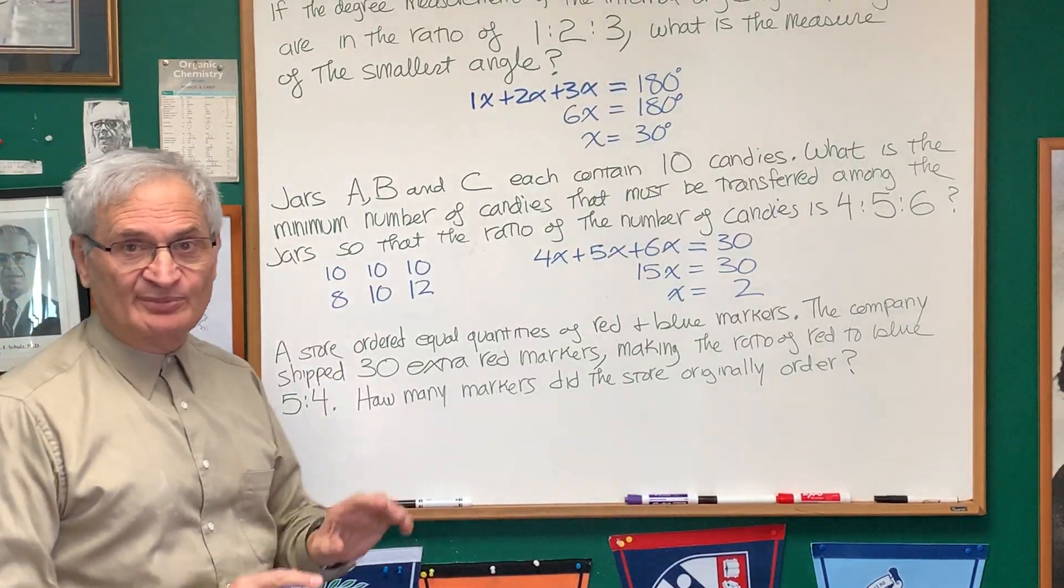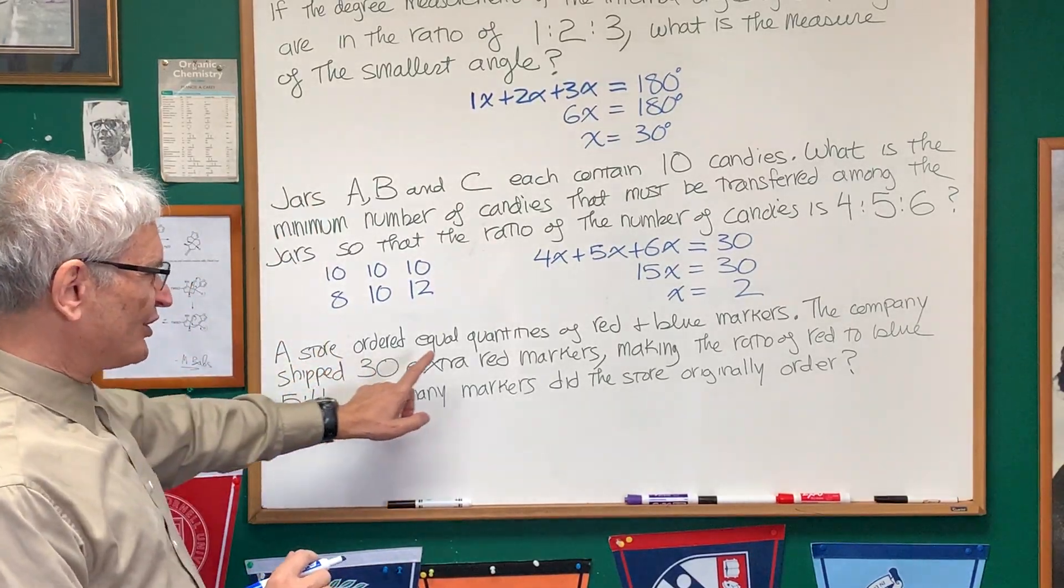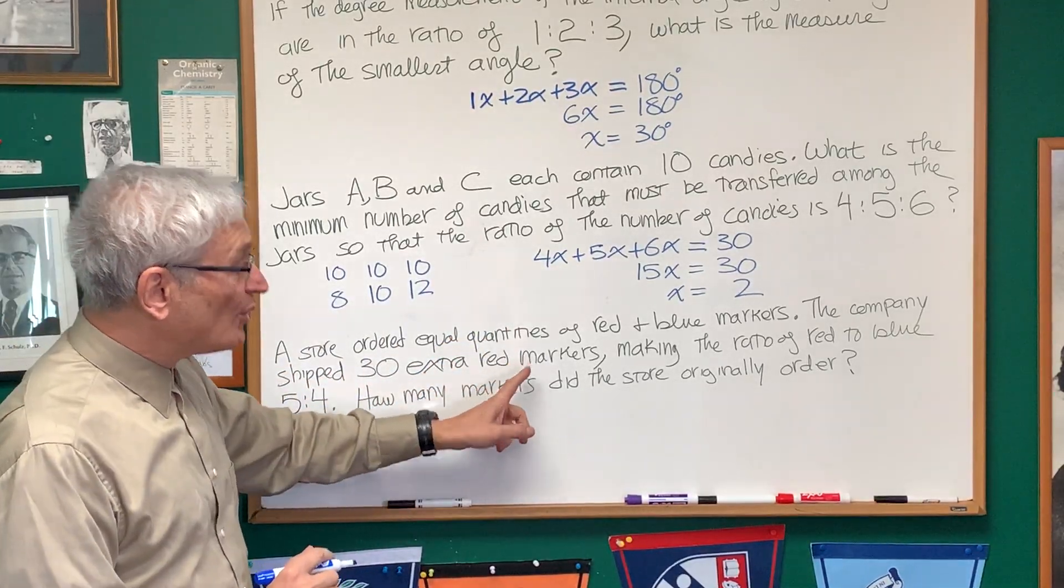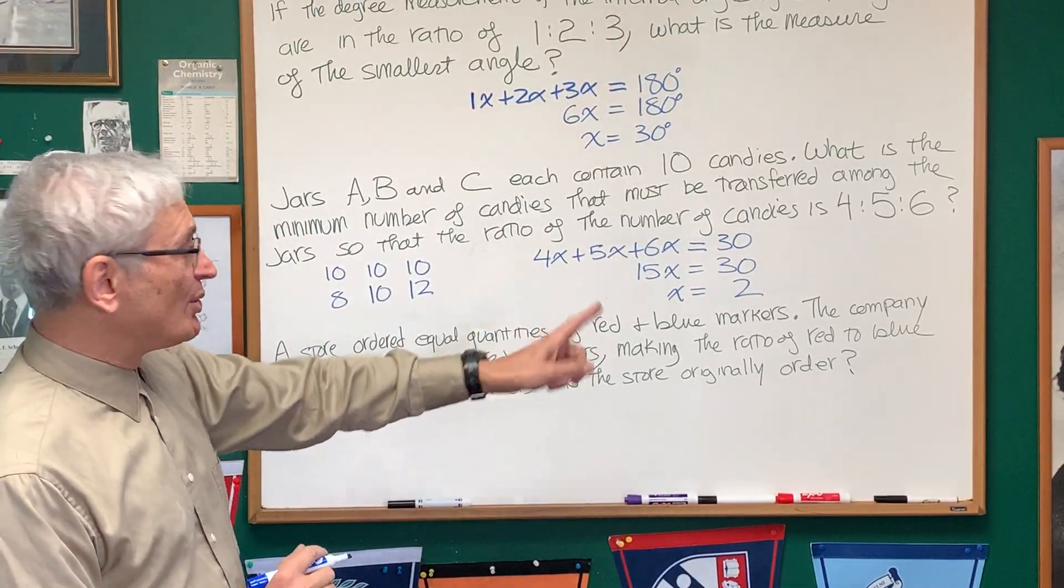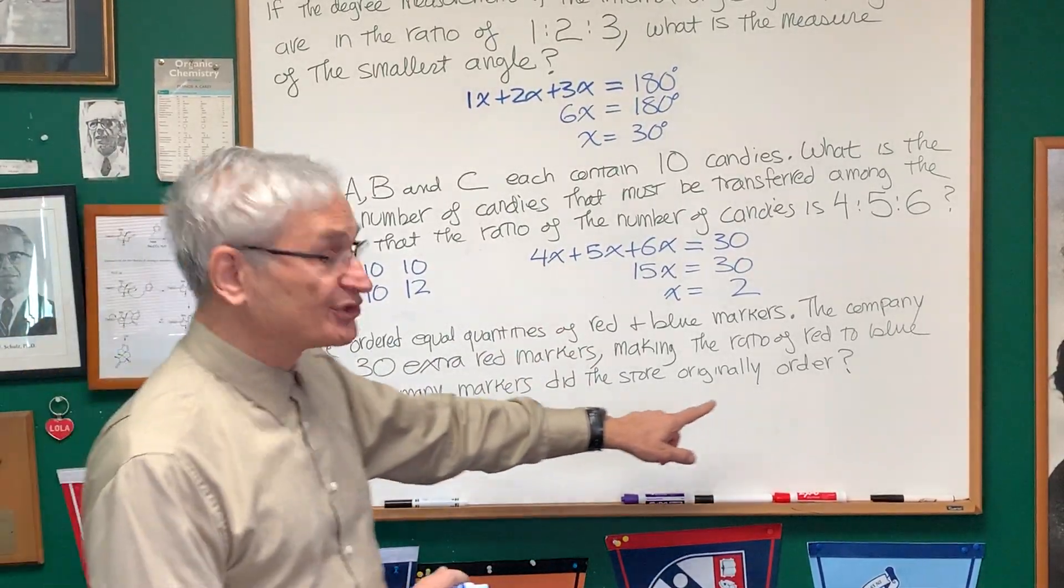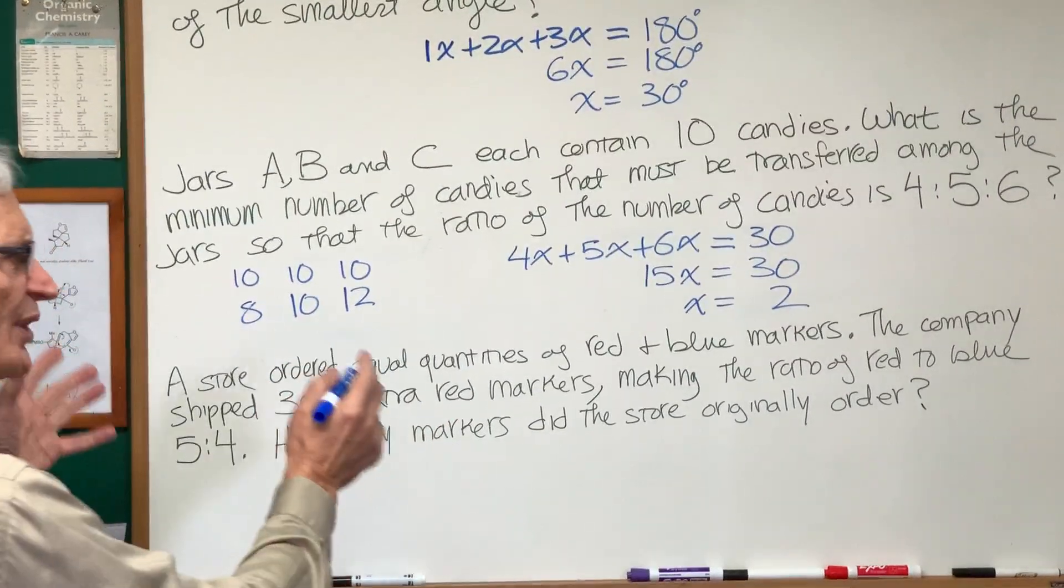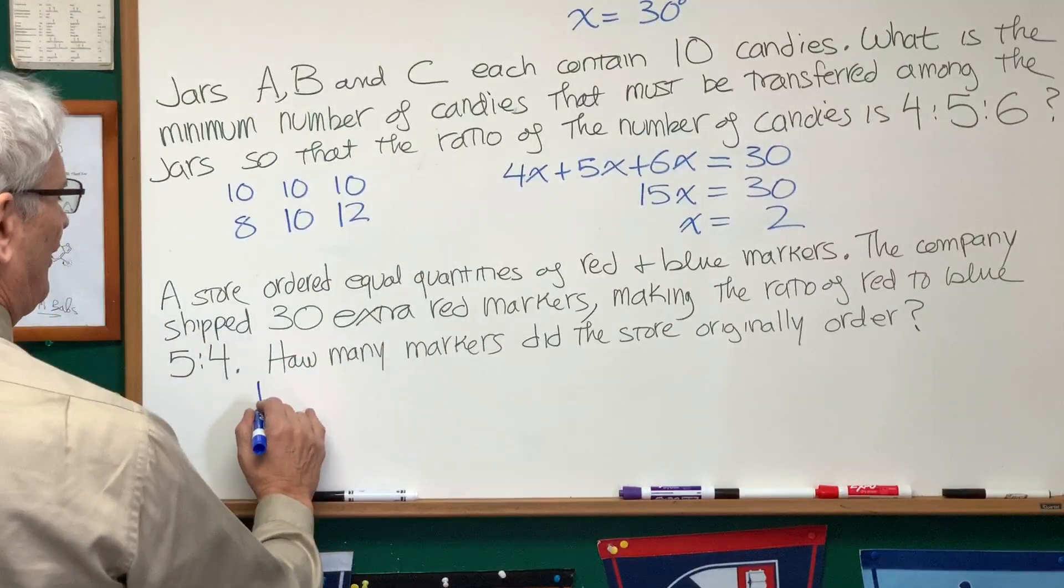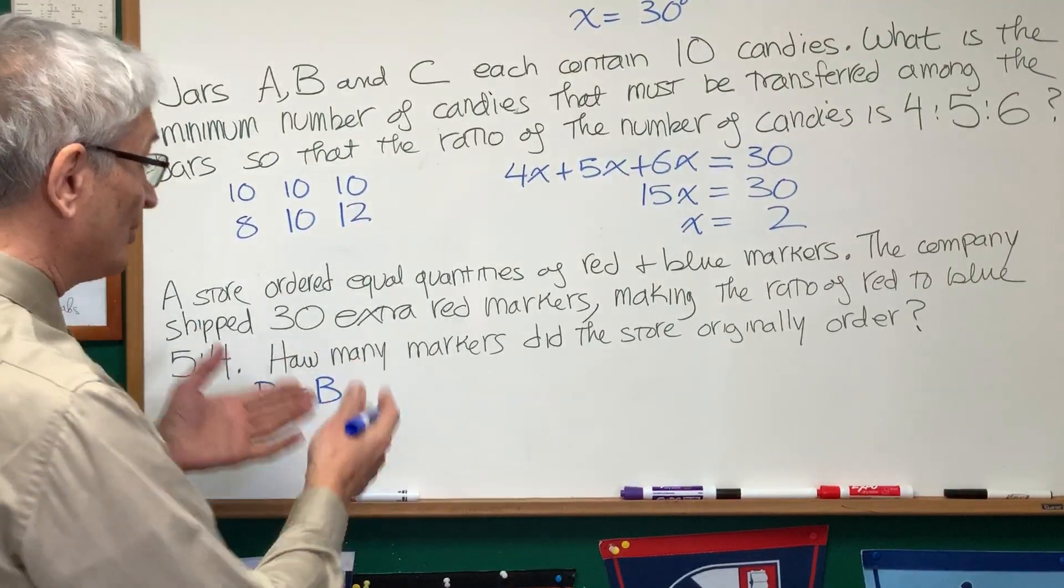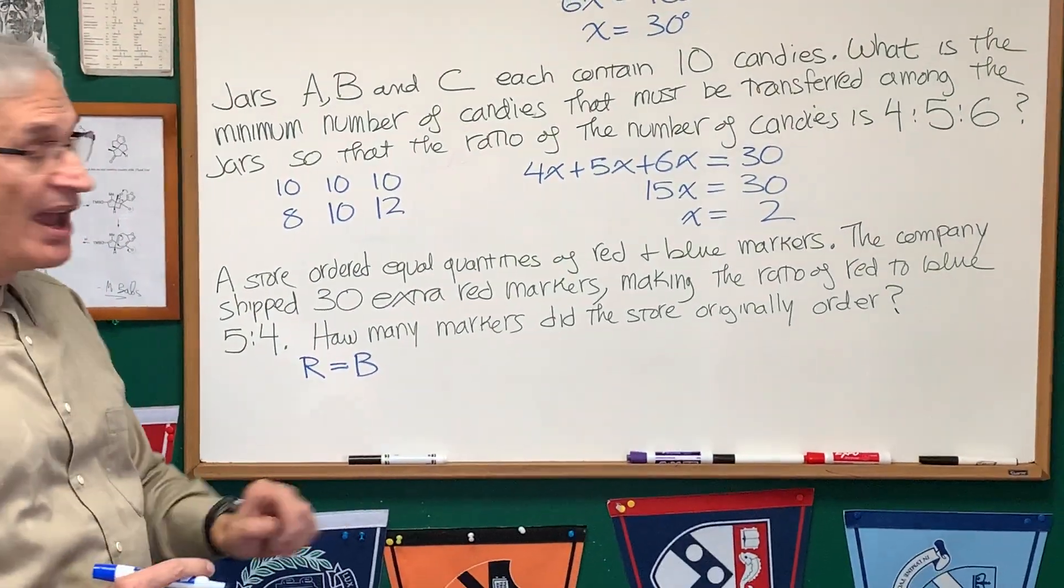Let's go on to this third problem, which is a little bit of a variation on the same idea. A store ordered equal quantities of red and blue markers. The company shipped 30 extra red markers, making the ratio of red to blue 5 to 4. How many markers did the store originally order? All right. Well, we know originally, let's assign the variable R for the number of red markers, and B, the number of blue markers, originally equal numbers of red and blue, R equals B.